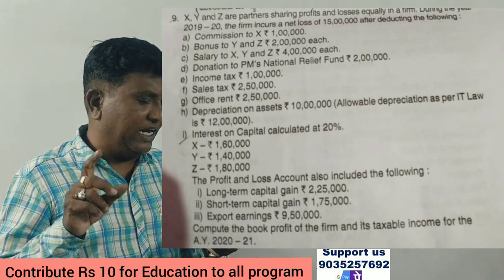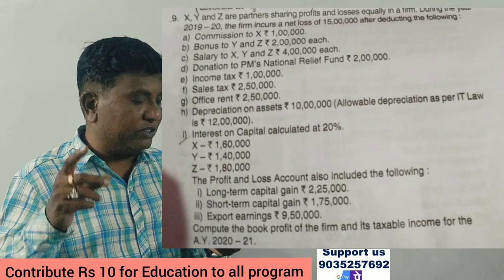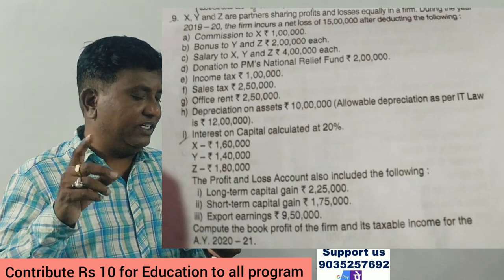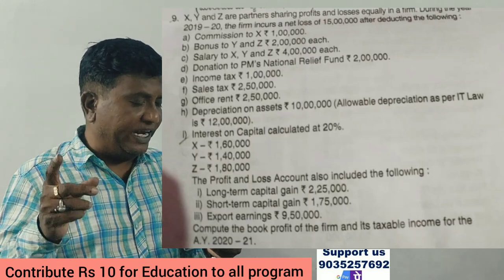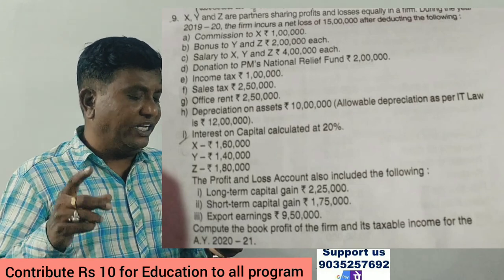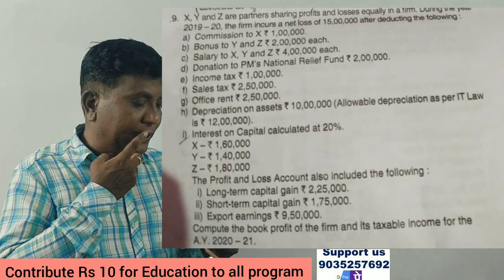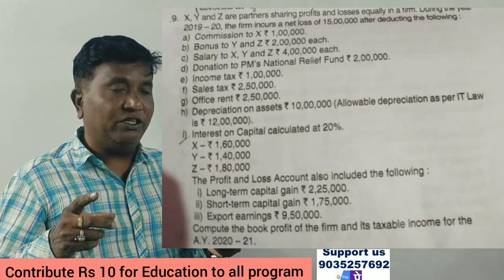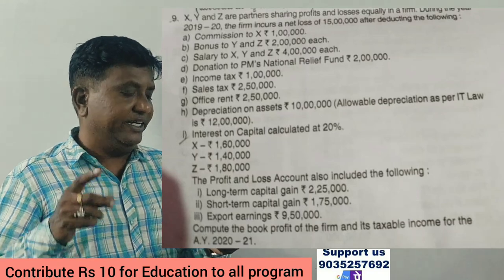X, Y and Z are partners sharing profits and losses in a firm. During the previous year 2019-20, the firm incurs a net loss of 15 lakhs, after deducting the following: commission to X; bonus to Y and Z of 2 lakhs each; salary to X, Y and Z of 4 lakhs each; donation to PM National Relief Fund 2 lakhs; income tax 1 lakh; sales tax 2 lakh 50; office rent 2 lakh 50; depreciation on assets 10 lakhs; allowable depreciation as per IT law 12 lakhs.